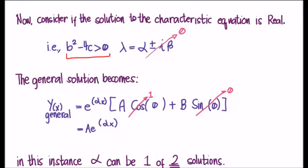Well, clearly the imaginary component beta is going to go to 0, and we'll just be left with the real alpha.